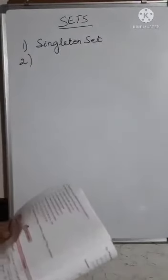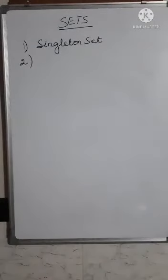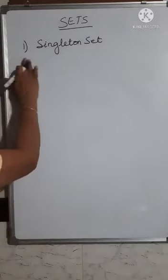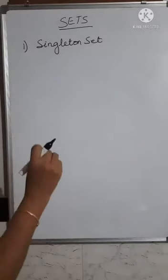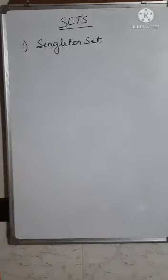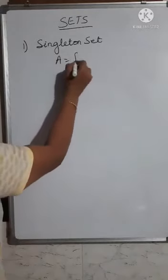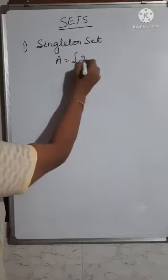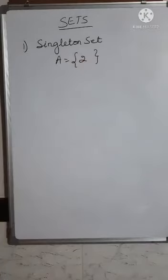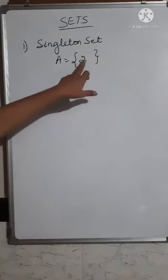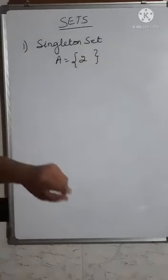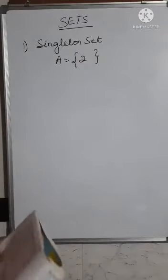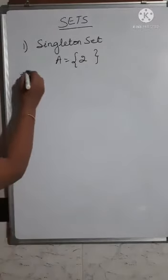For example, if I tell you: set of even prime numbers. The even prime number is only 2, so you will write A = {2}. You will not get any other element in it. Such a type of set where you have got only one element in it is called a singleton set.